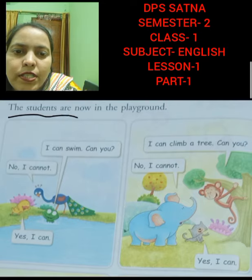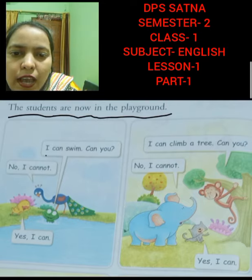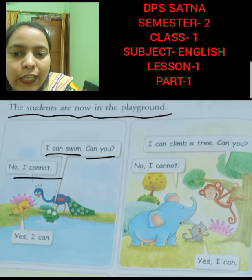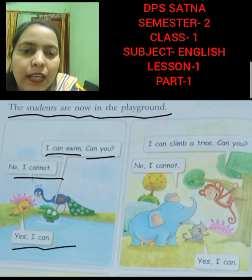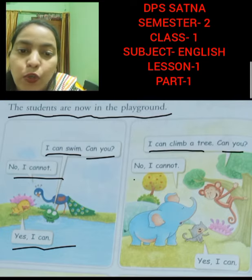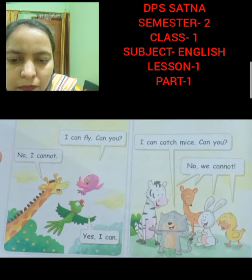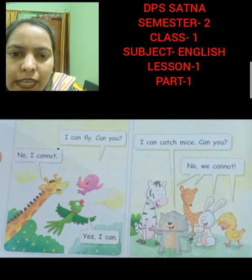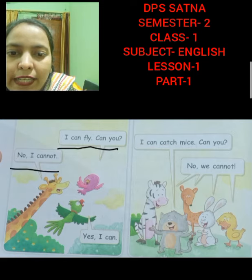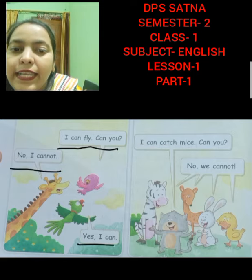The students are now in the playground. I can swim. Can you? No, I cannot. Yes, I can. I can climb a tree. Can you? No, I cannot. Yes, I can. I can fly. Can you? No, I cannot. Yes, I can.